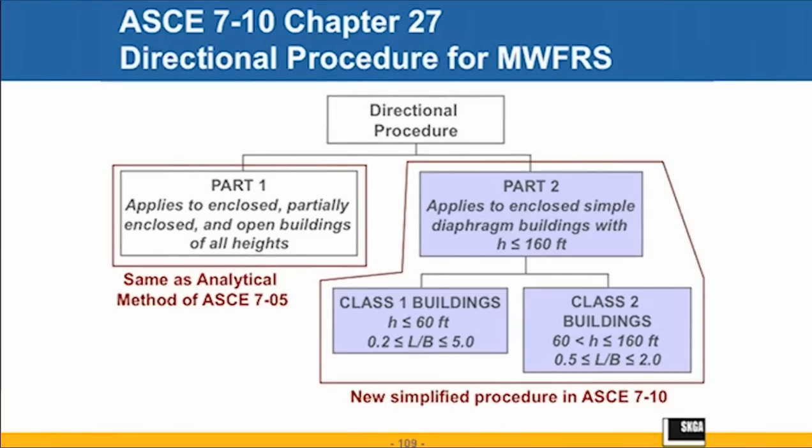That brings me to the new simplified wind design procedure. The main wind force resisting part is in part 2 of chapter 27, and the component and cladding part is in part 4 of chapter 30 — and we will look at both. This new simplified procedure applies to enclosed simple diaphragm buildings with a mean roof height not exceeding 160 feet.